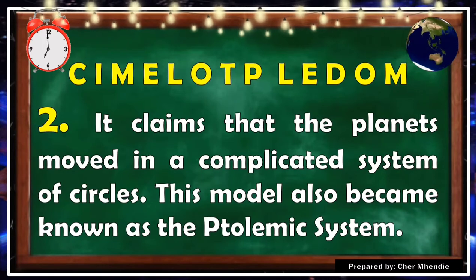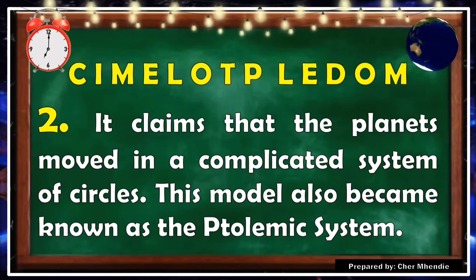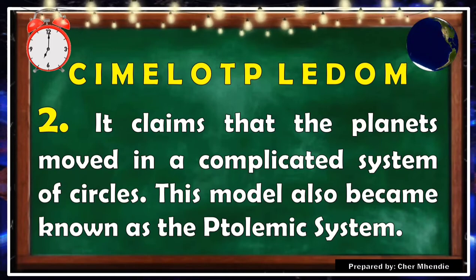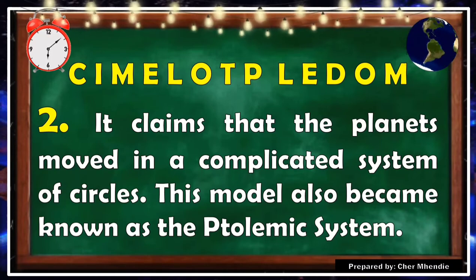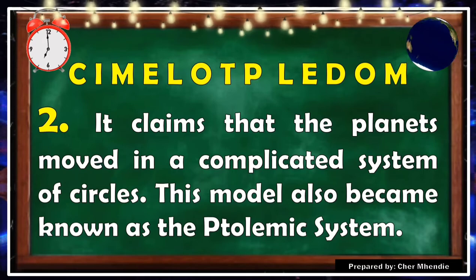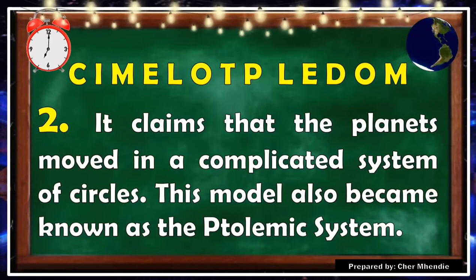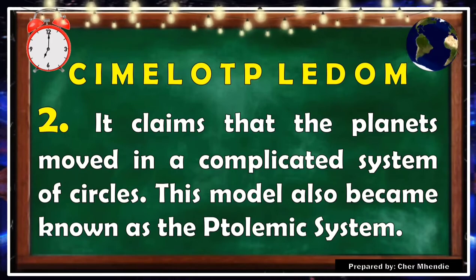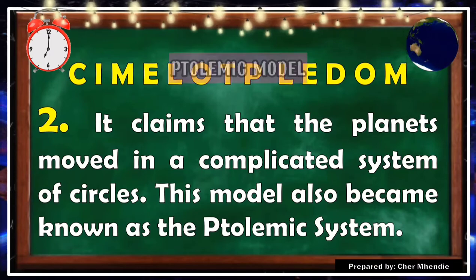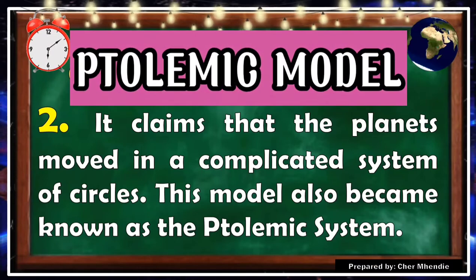Number two: It claims that the planets move in a complicated system of circles. This model also became known as the Ptolemaic system. The correct answer is Ptolemaic model.